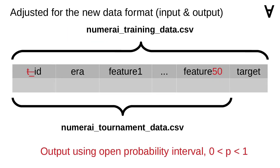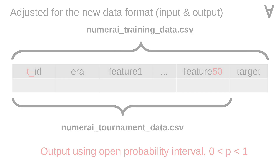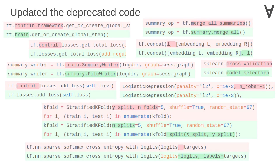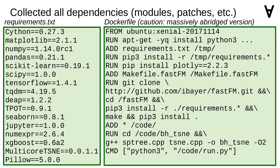Since he wrote it for one of the early tournaments, I needed to update the code to the new input data format and make sure the predictions fall into an open interval from 0 to 1. I also updated the calls to the deprecated TensorFlow and scikit-learn functions. I collected all the modules the code required and wrapped it into a Docker container — note that the Dockerfile is heavily abridged here.